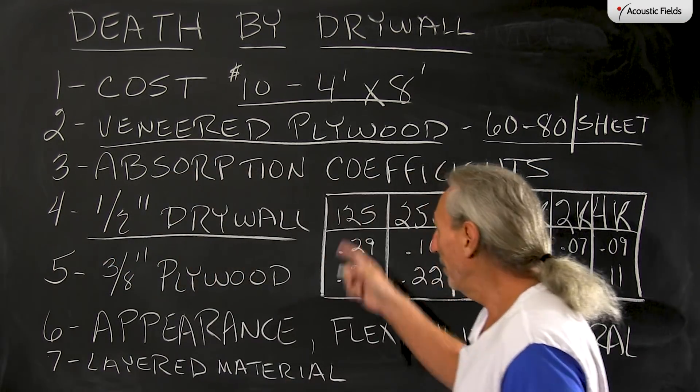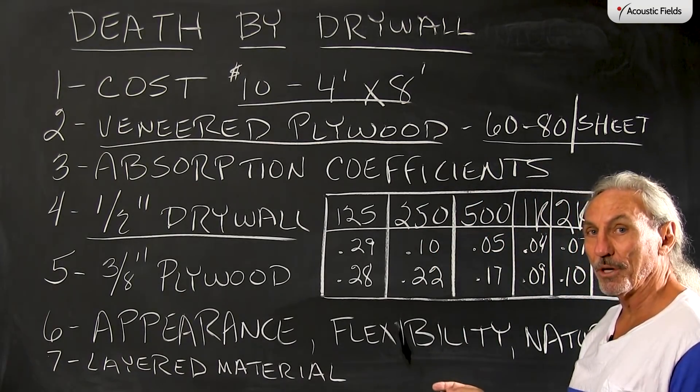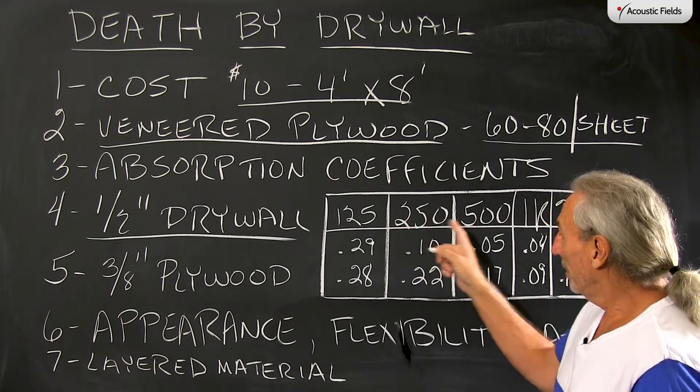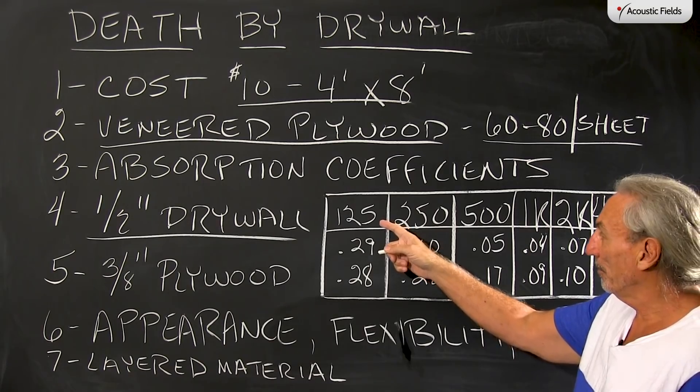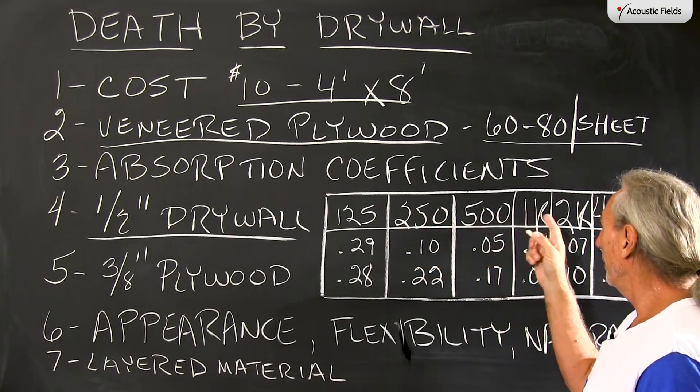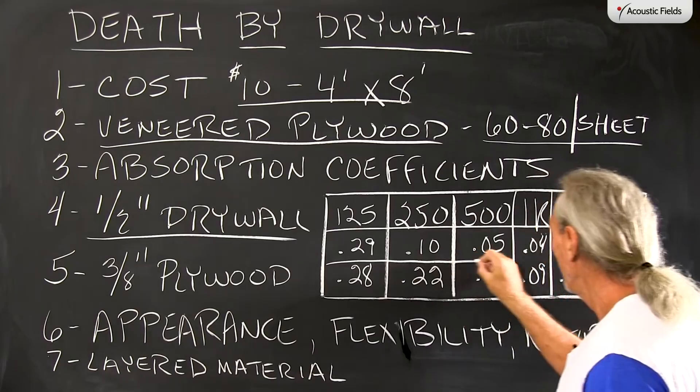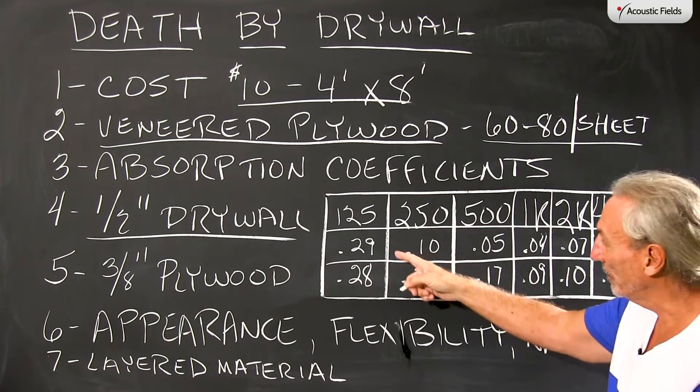Just a half inch piece of drywall, we all know what absorption coefficients are. You can look at the rate, you can look at the frequency: 125, 250, 500, 1K, 2K, 4K, and you can compare the absorption coefficients.